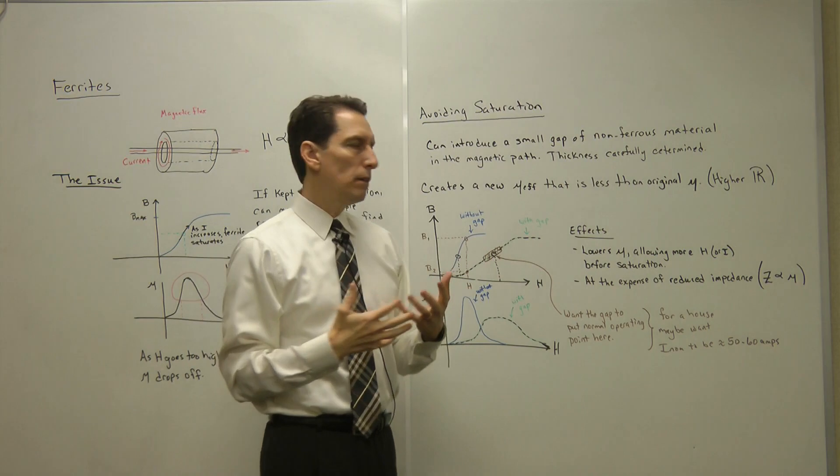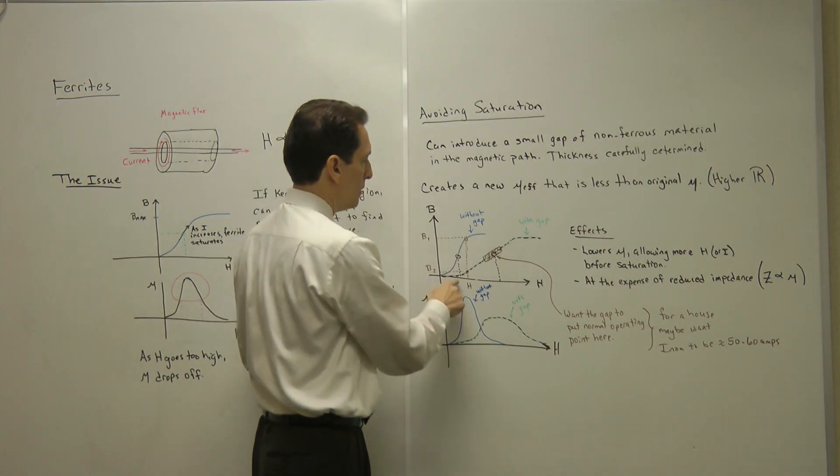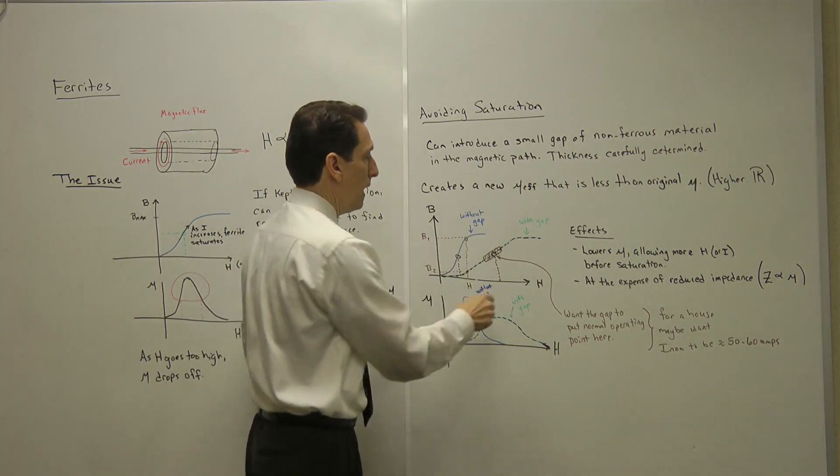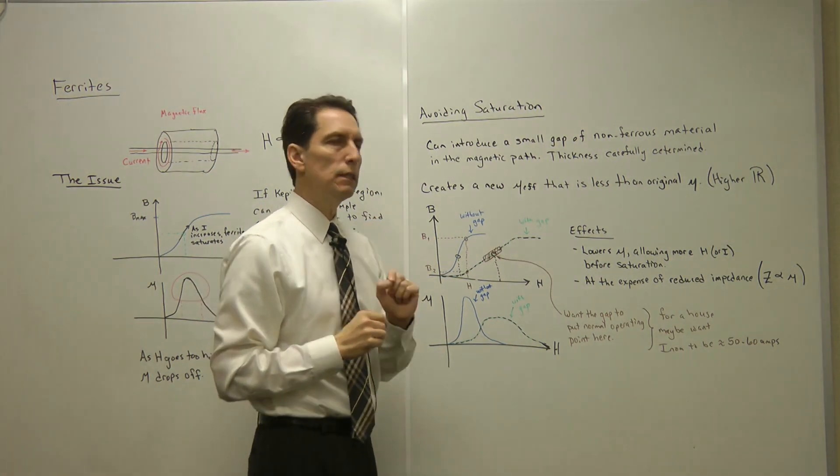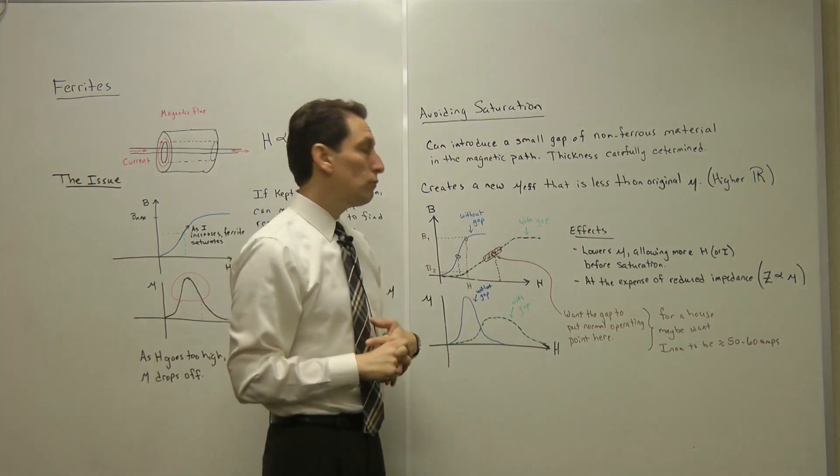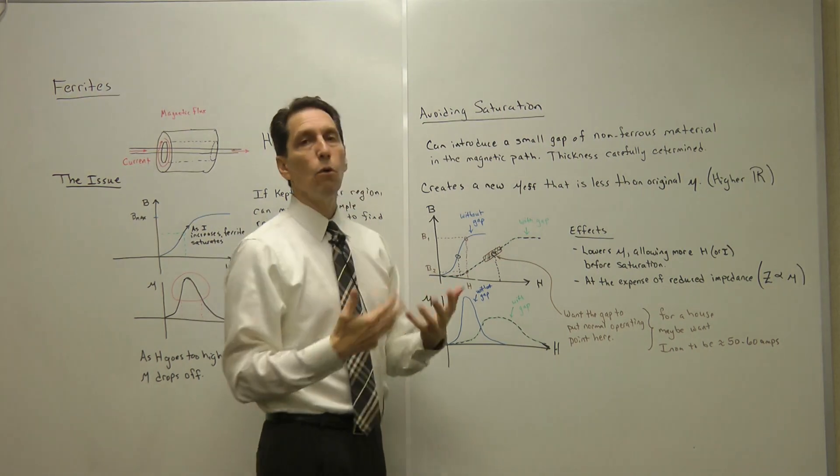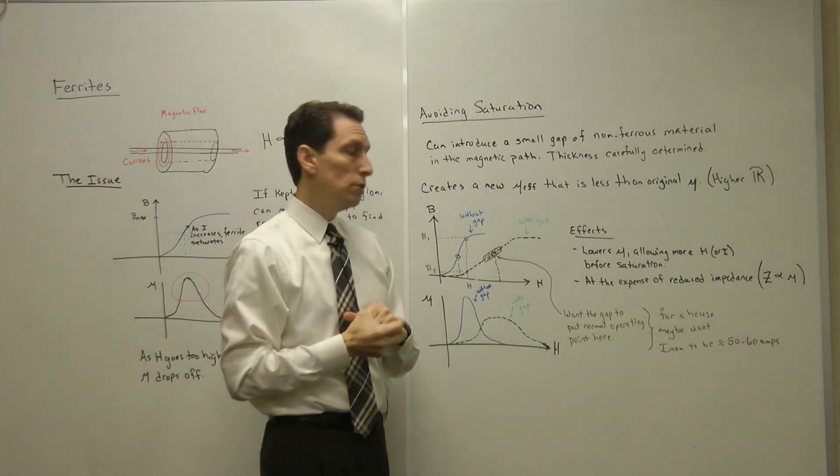What happens is you greatly affect the BH curve of the ferrite. The blue one here shows the original curve. Normally we try to operate here to stay well away from saturation. By introducing that small gap, a very carefully controlled distance gap, you can lay the curve over and spread out that linear region. That's really nice because now it lets you operate at a much higher current. That's really the goal of this, to operate at a much higher current without being up in the saturation region.